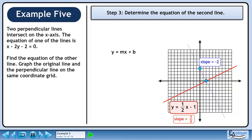Start with y = mx + b. The slope is -2 and the y-intercept is 4. The equation of the second line is y = -2x + 4.